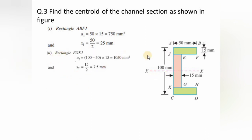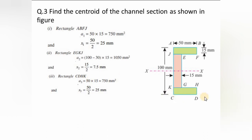Rectangle 2 (the web): depth = 100 − 15 − 15 = 70 mm, breadth = 15 mm, so A2 = 70 × 15 = 1050 mm², and x2 = 15/2 = 7.5 mm from the vertical reference axis. Rectangle 3 (bottom flange, CDHK): A3 = 50 × 15 = 750 mm², and x3 = 50/2 = 25 mm from the vertical reference axis.